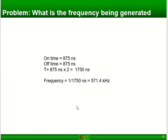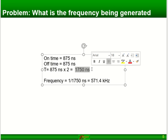The next question is what is the frequency being generated? My on time is 875, my off time is 875, so the total time is 1750 nanoseconds. That's my period of the generated pulse on pin number 5 of port B.